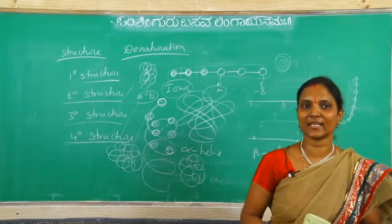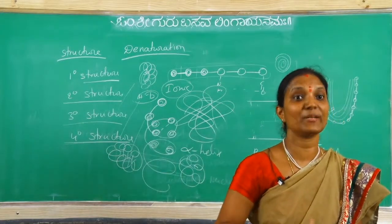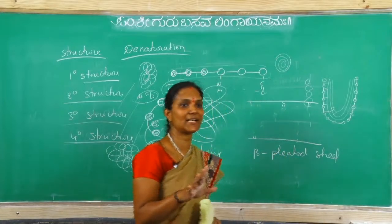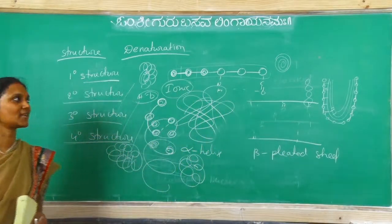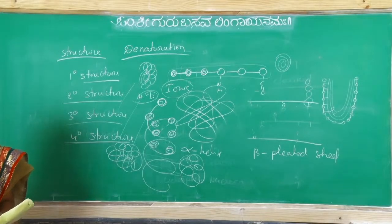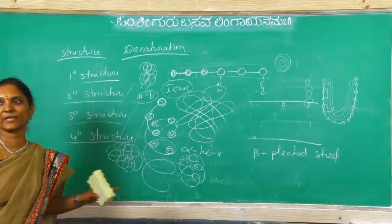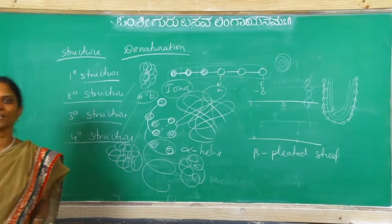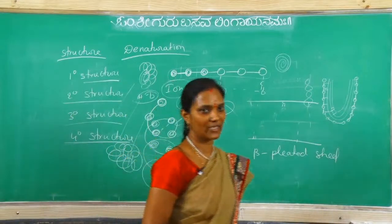Why do they lose their activity? Because breaking of structures takes place. Breaking of which structures? Quaternary, tertiary, secondary - but no change in primary structure. This is very important: no change in primary structure during denaturation. Remaining structures breaking takes place, that is why they lose their biological activity.